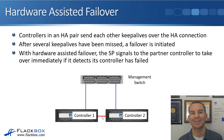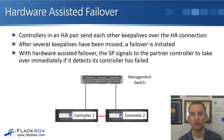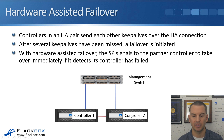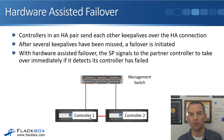Hardware-assisted failover can help reduce the delay before takeover occurs. If Controller 1 has a problem and ONTAP crashes, because the service processor is constantly monitoring the controller, it will see that ONTAP has gone down and immediately signal to the second controller that Controller 1 has failed, telling it to take over immediately. This saves waiting for those missed keepalives, meaning HA takes effect more quickly.